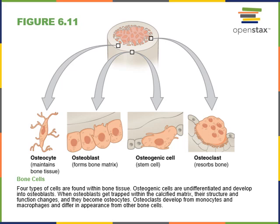Osteoclasts are another type of cell found in bone. Osteoclasts break down bone — that is, they reabsorb bone. They break down the matrix of bone in order to release calcium from the bone into the blood as a mechanism to maintain blood calcium concentration. The activity of osteoclasts is regulated by the endocrine system. Parathyroid hormone stimulates osteoclast activity in order to release calcium from bone, maintaining blood calcium homeostasis.